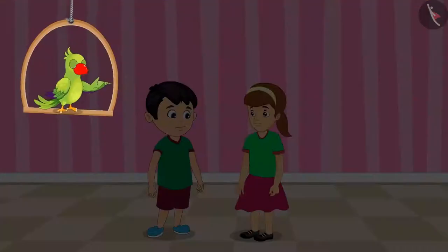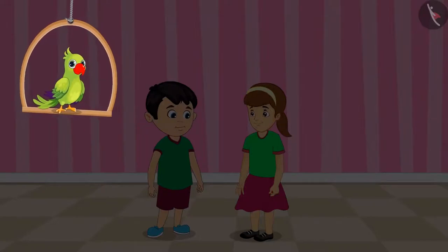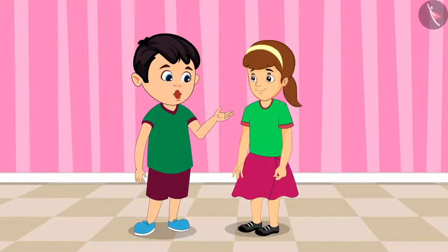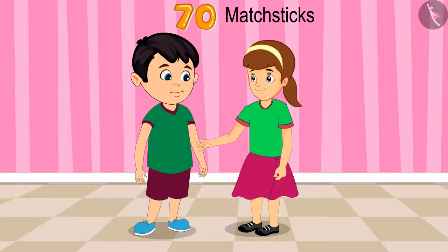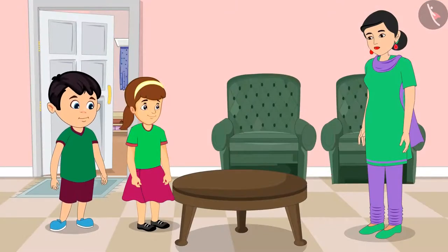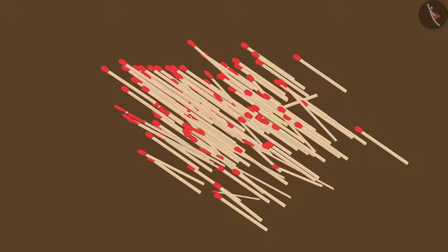Chotu and Arti are thinking of making a model today with matchsticks. Arti, we will need 70 matchsticks for the model. All right, Chotu, let us ask mummy for matchsticks. Mommy, please give us matchsticks. We want to make a model using them. Okay, take these.